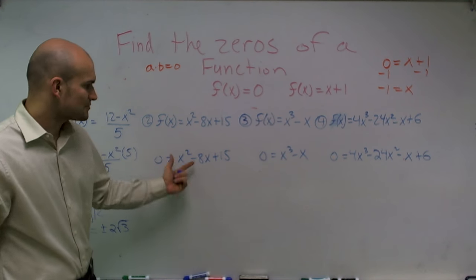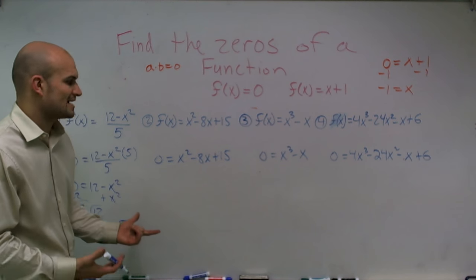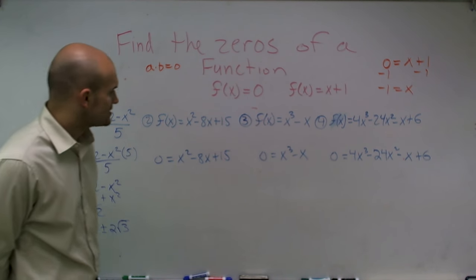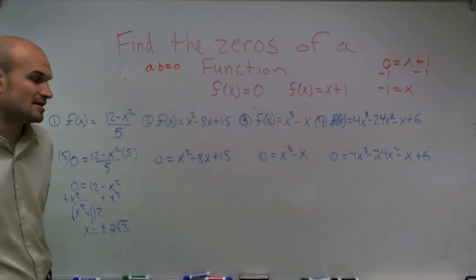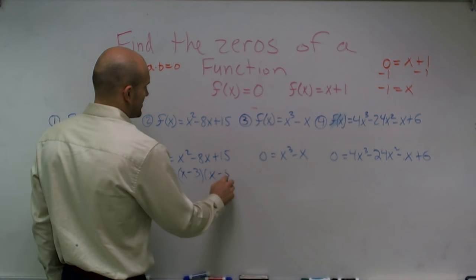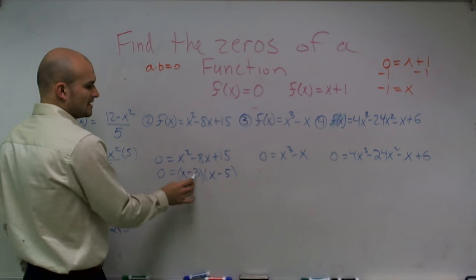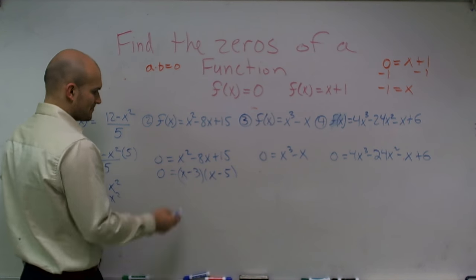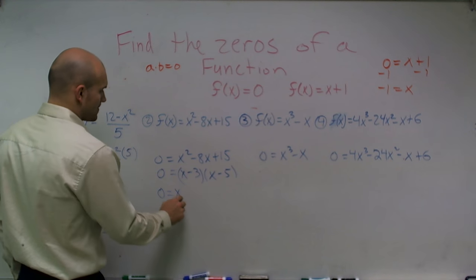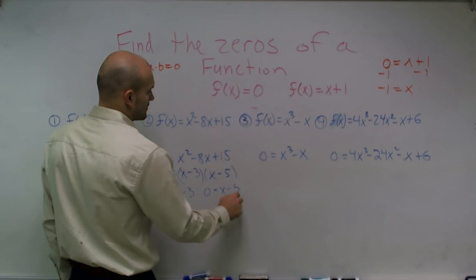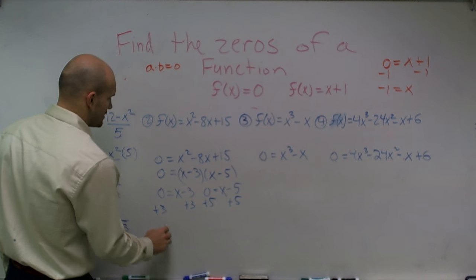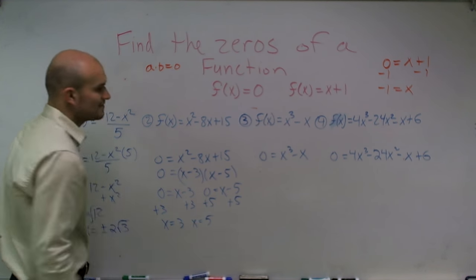For the second practice problem, I have x squared minus 8x plus 15. I can't just add terms over and solve for x — I have to factor. What two numbers multiply to give me 15 but add to give me negative 8? So 0 equals x minus 3 times x minus 5 — negative 3 times negative 5 is positive 15, and negative 3 plus negative 5 is negative 8. Setting each equal to 0, I get x equals 3 and x equals 5 as my two zeros.